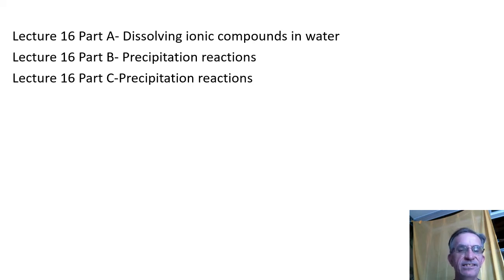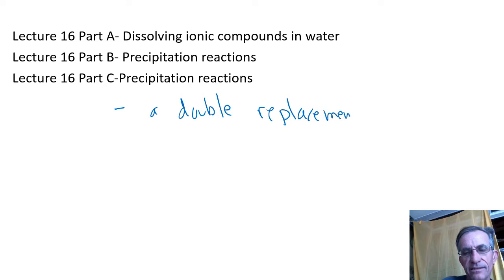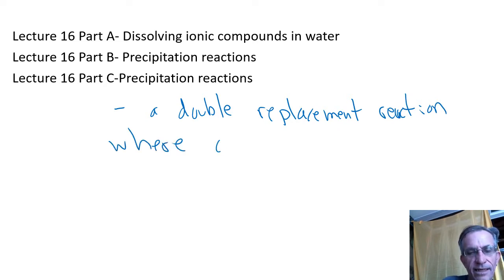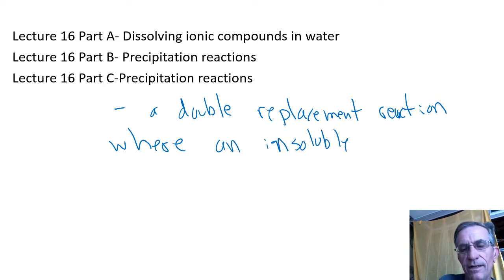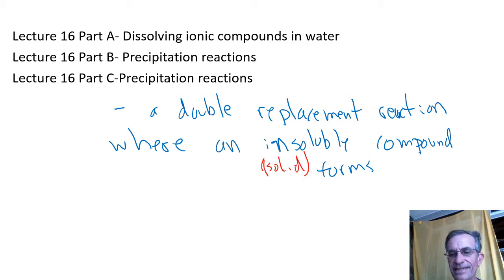Lecture 16 part B. In this part we're going to look at precipitation reactions. A precipitation reaction is really just a double replacement reaction where an insoluble compound forms — meaning we're going to be creating a solid. It's going to be a double replacement reaction, like the double switcheroo thing we looked at in the last lecture.